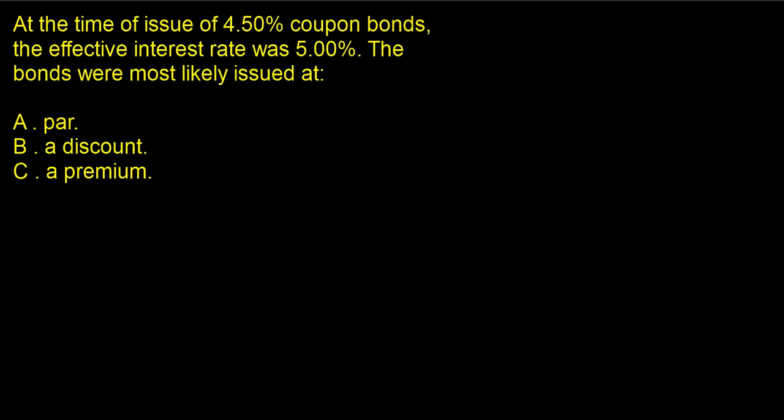I love a problem like this. This is a problem that you don't have to do a calculation — it's all about intuition, and if you know the intuition, you'll get it right. At the time of issuance of a 4.5% coupon bond, the effective interest rate was 5%. The bonds were most likely issued at par, discount, or premium.